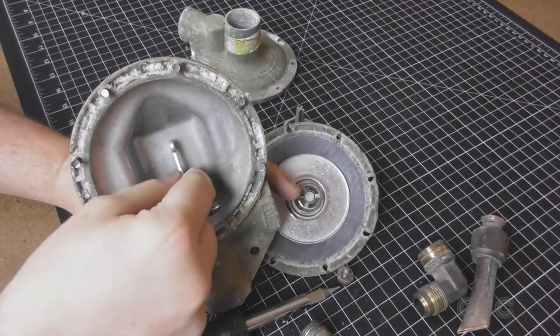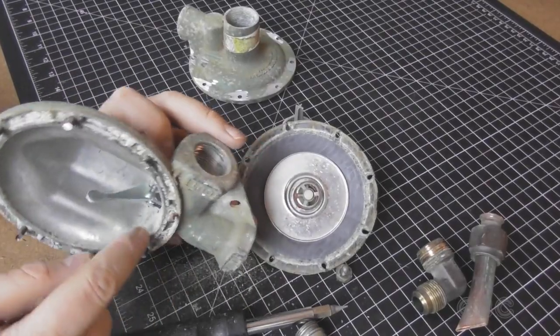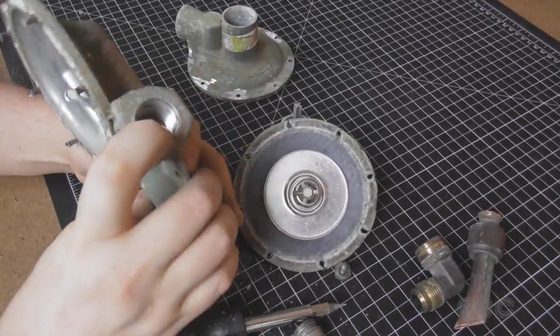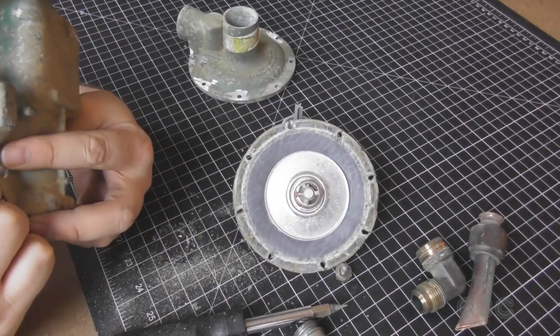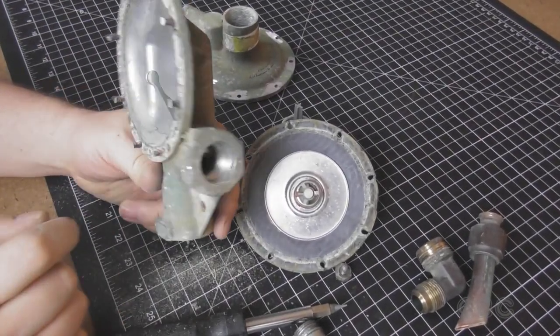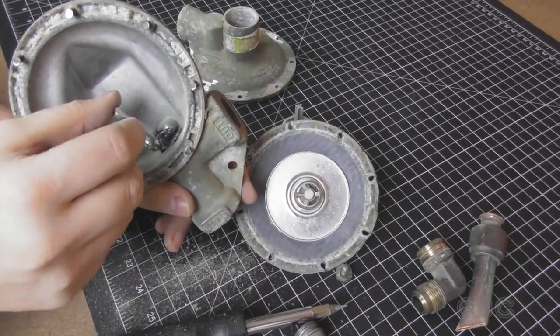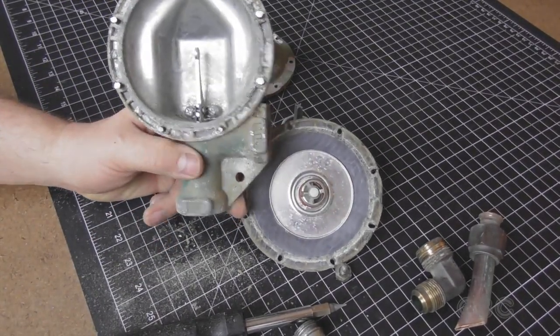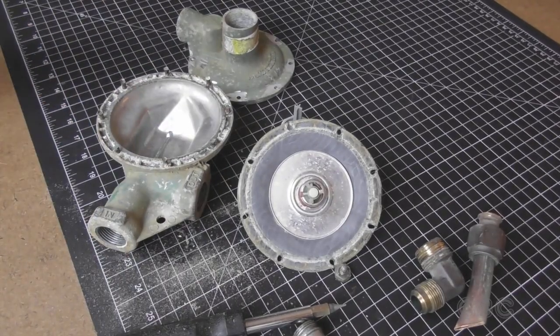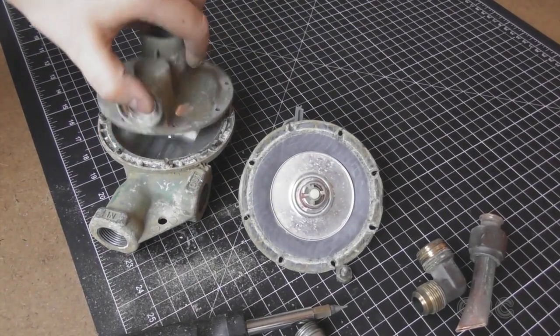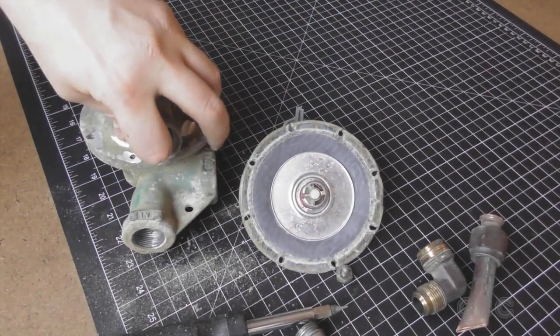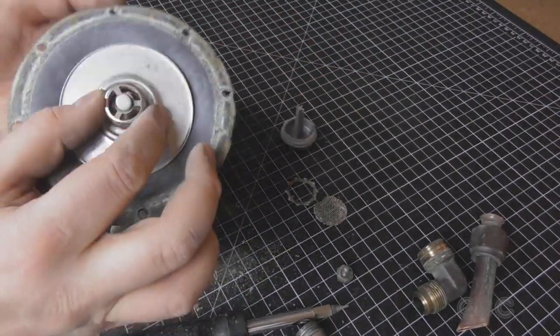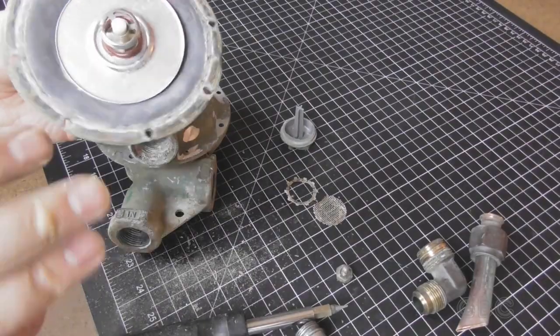So the gas comes in the inlet, fills the area behind the diaphragm, pushing against the spring, closing the valve, and stopping flow. When the pressure goes down, the spring will push the diaphragm back and allow more fuel to come in. The vent is to allow the front side of the diaphragm to be at atmospheric pressure. As it moves it has to allow air in and out.